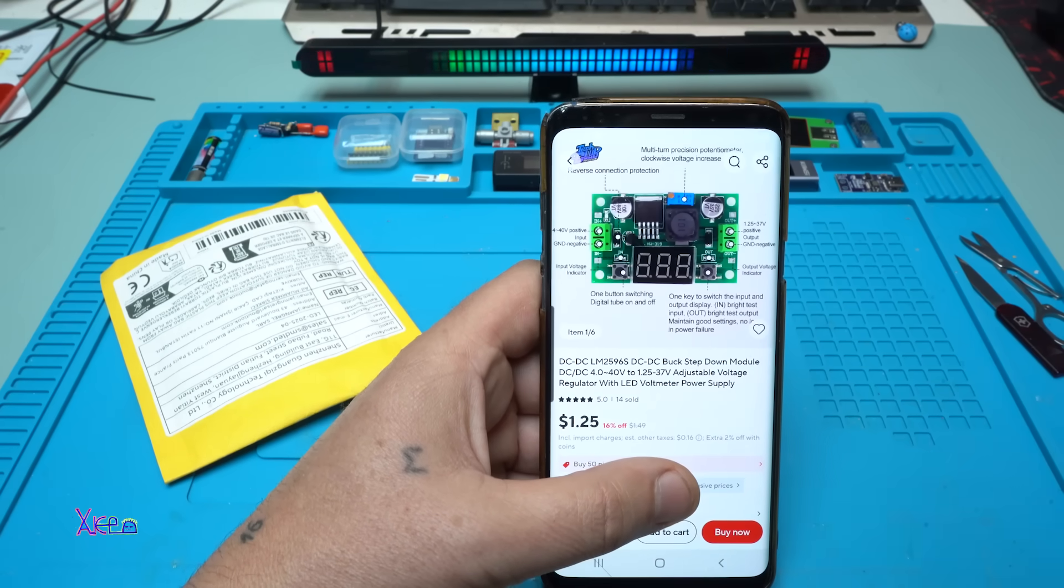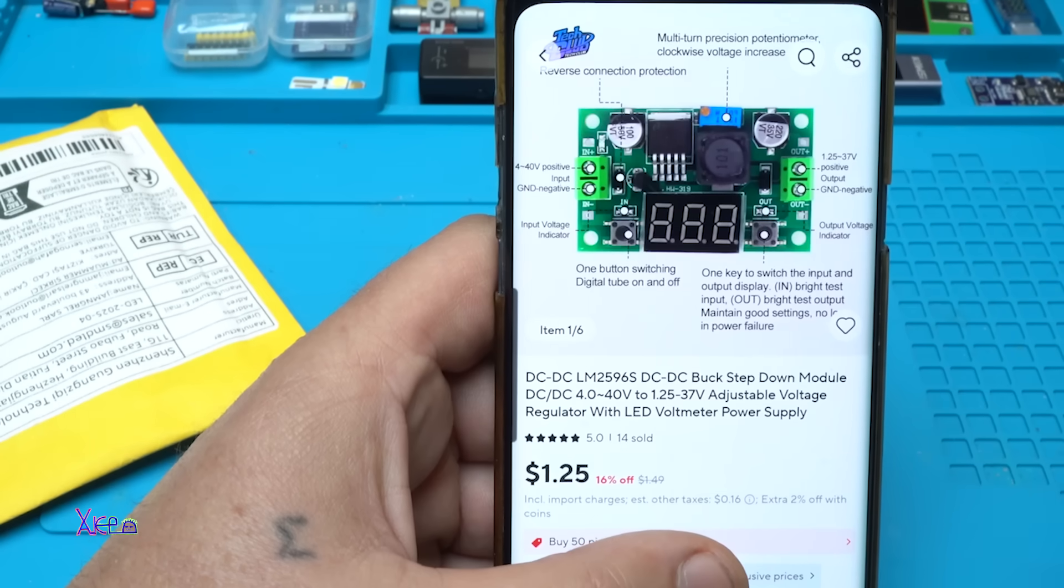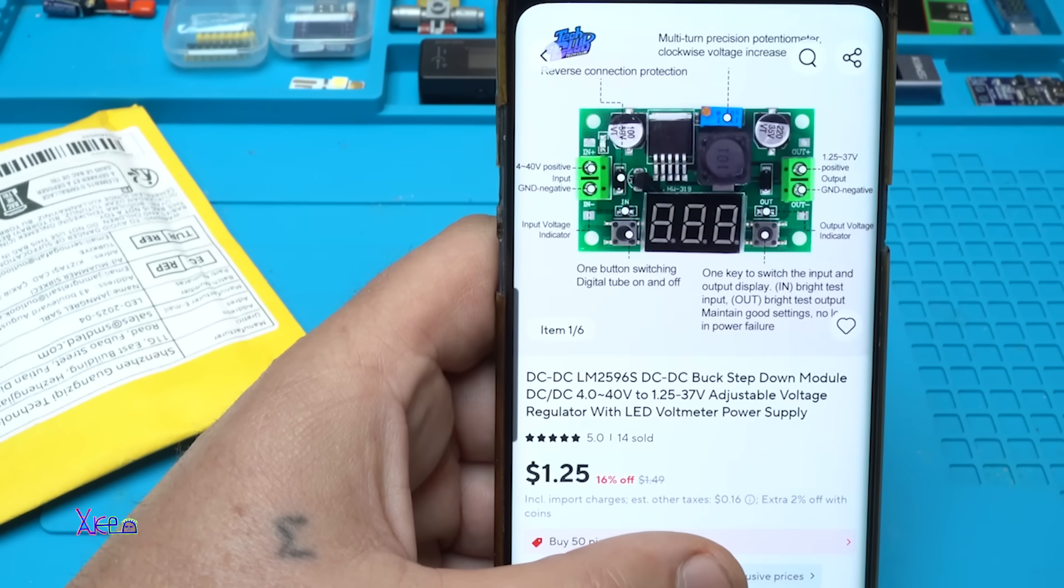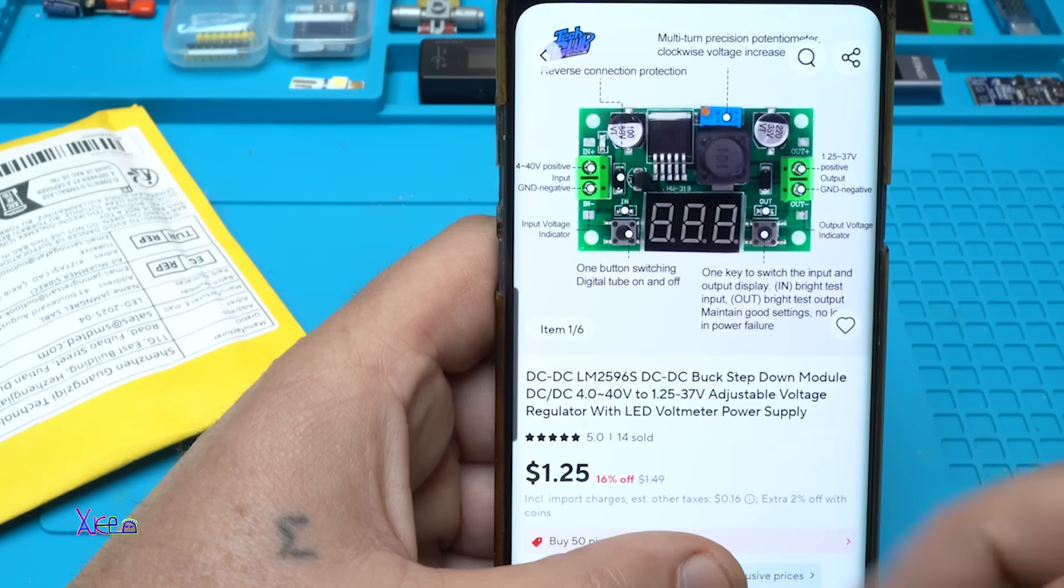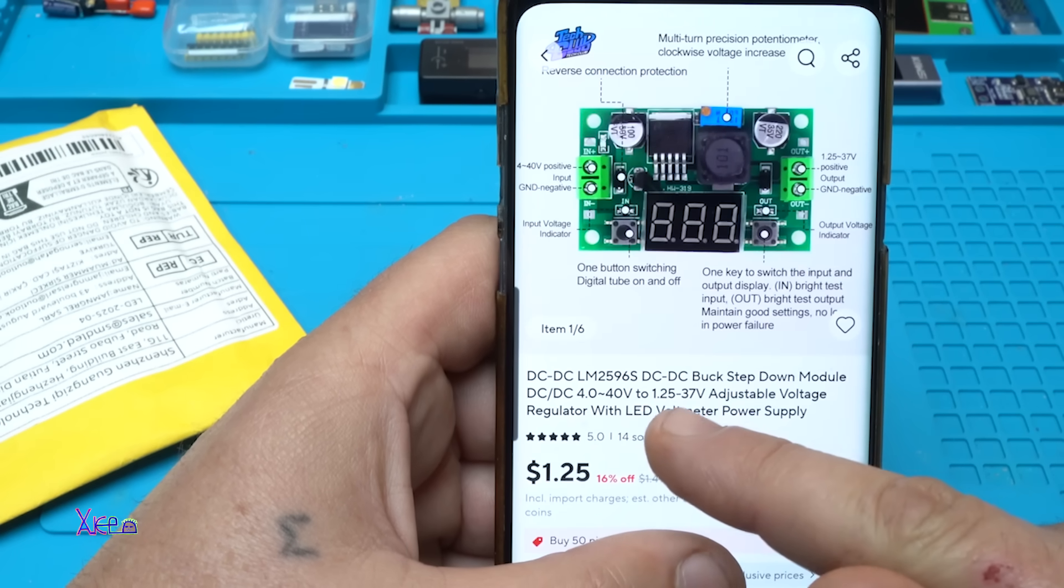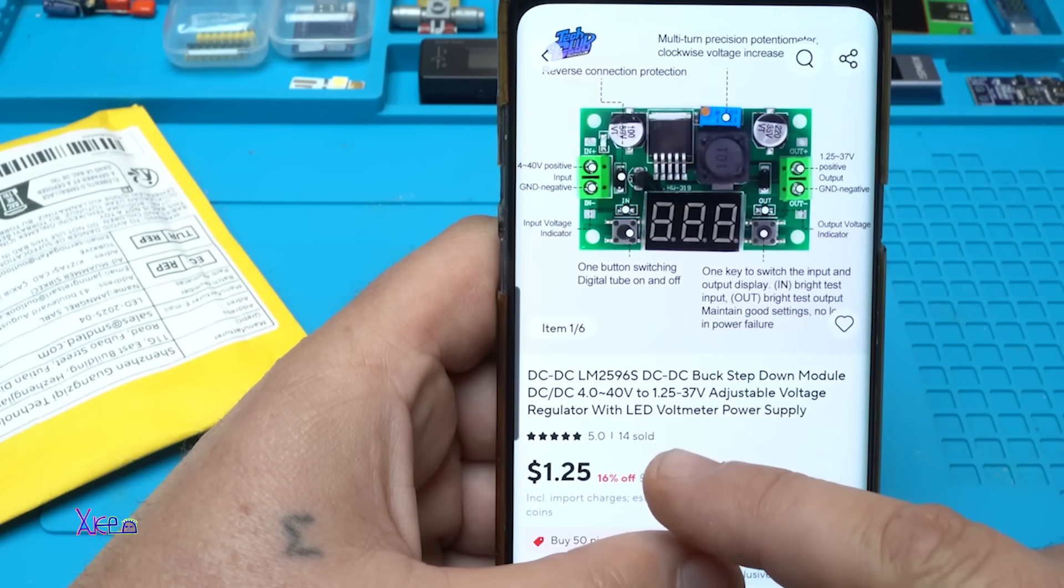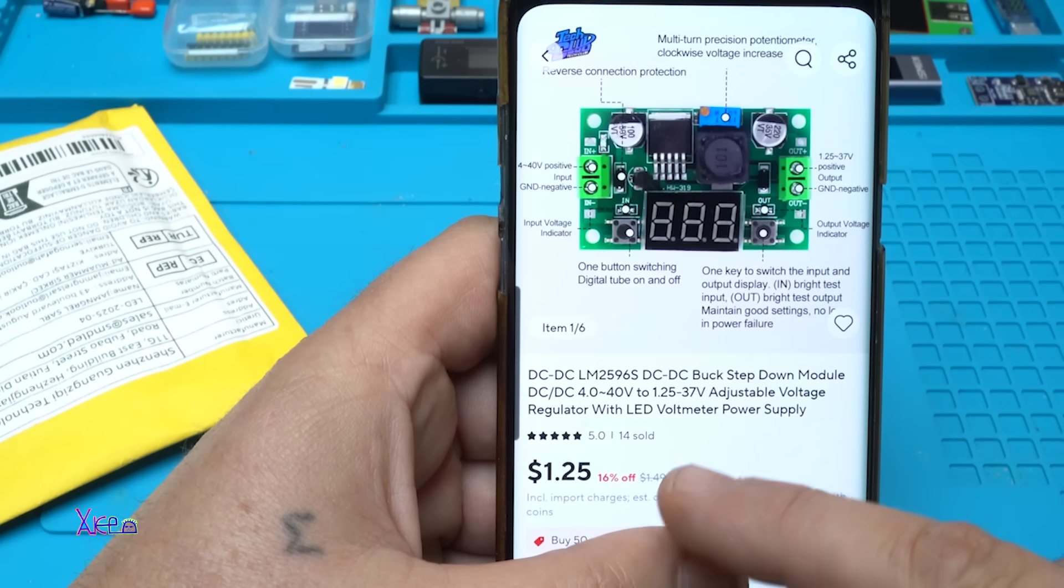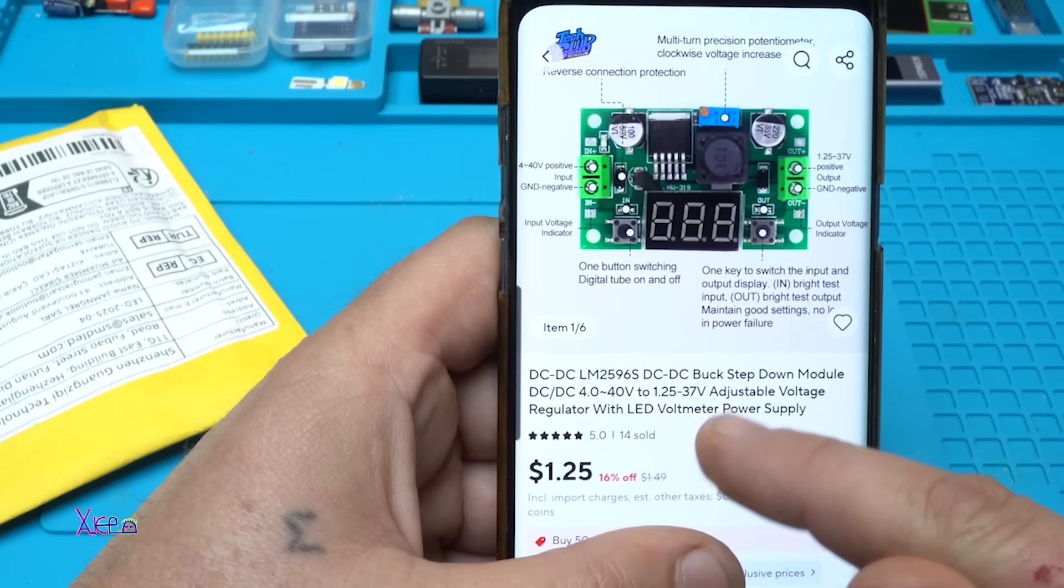Why I love this kind of modules - because they are cheap, useful, and practical in electronics. And what kind of module is this one? It's a DC-DC LM2596S buck step-down module that works from 4 volts to 40 volts DC voltage and can be adjusted for output voltage from 1.25 to 37 volts.